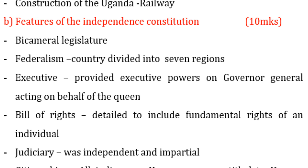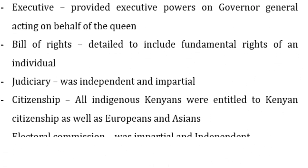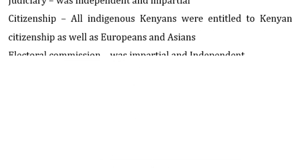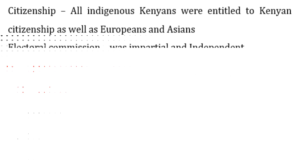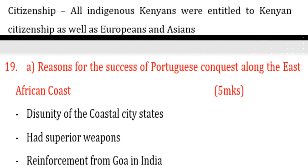It also had an independent and impartial judiciary. These are the features of the independence constitution of Kenya. Regarding citizenship, all indigenous Kenyans were entitled to Kenyan citizenship, as well as Europeans and Asians. So at independence, Kenyans, Europeans, and Asians were recognized as citizens.